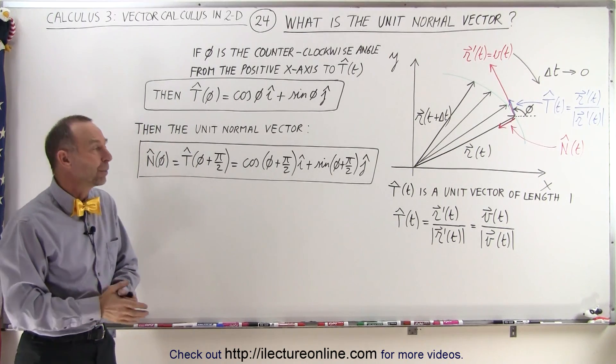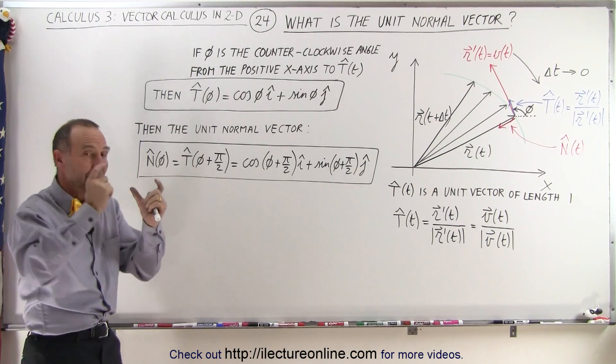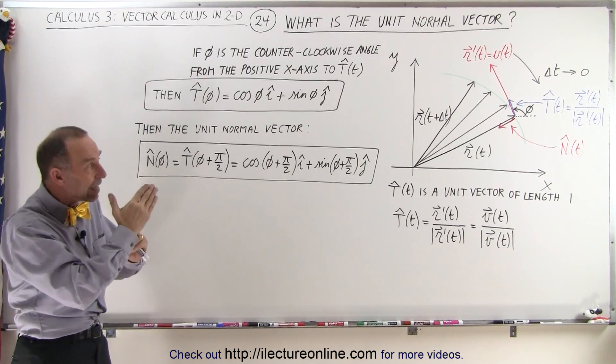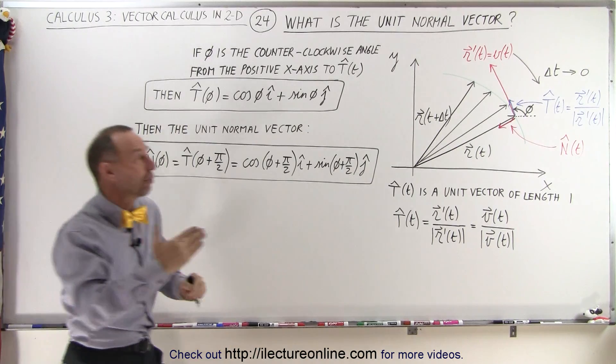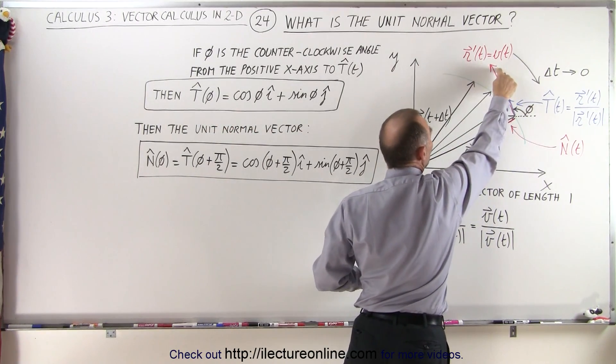Now what is the meaning of all that? Well, at least we define two vectors, one being perpendicular to the other. They're both one unit long. One is tangent to the direction of motion of the particle, which means it's in the same direction as the velocity, one unit long.